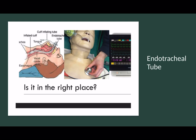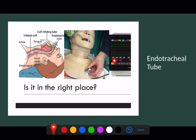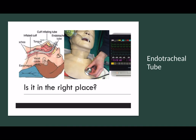To confirm tube position, you should always have the end-tidal CO2 trace up. You can see in the picture here a graph with little spikes going up — that is the CO2 being monitored by the ventilator or the monitor. If you can't see that trace with each breath, then the tube is in the incorrect position and you need to reassess that patient, potentially replace the tube, or take appropriate action depending on the situation. But certainly call for help. Always look at the end-tidal trace.